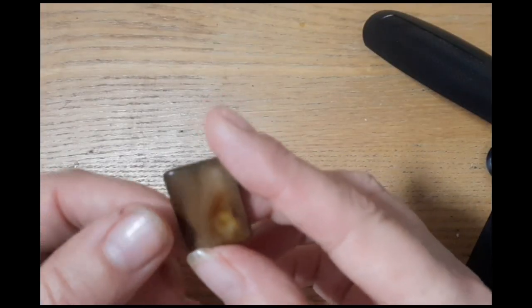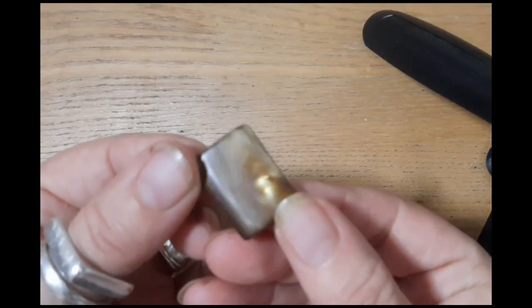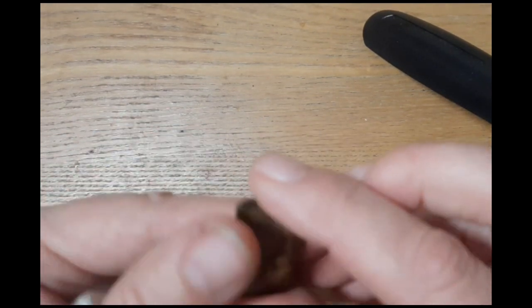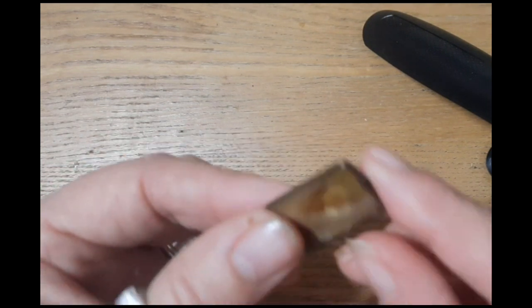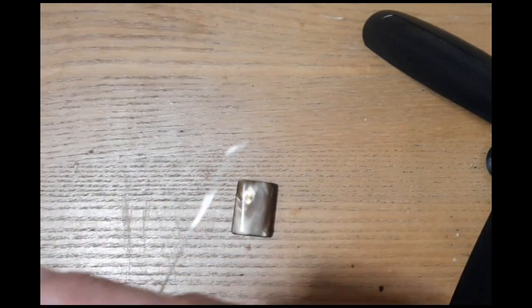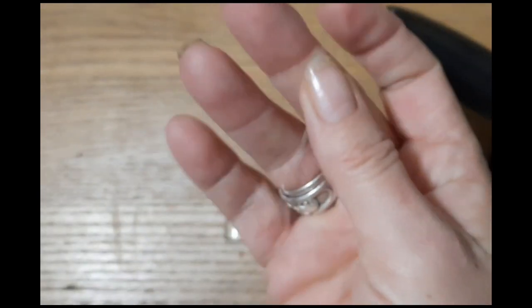I'm going to wire wrap this piece of abalone shell. It's very nice, shiny and smooth, and there's no holes in it, so this would be quite difficult to wire wrap. I have a piece of scrap wire here that has a few kinks in it. It's about 50 centimeters long, so I'm hoping it will be enough.